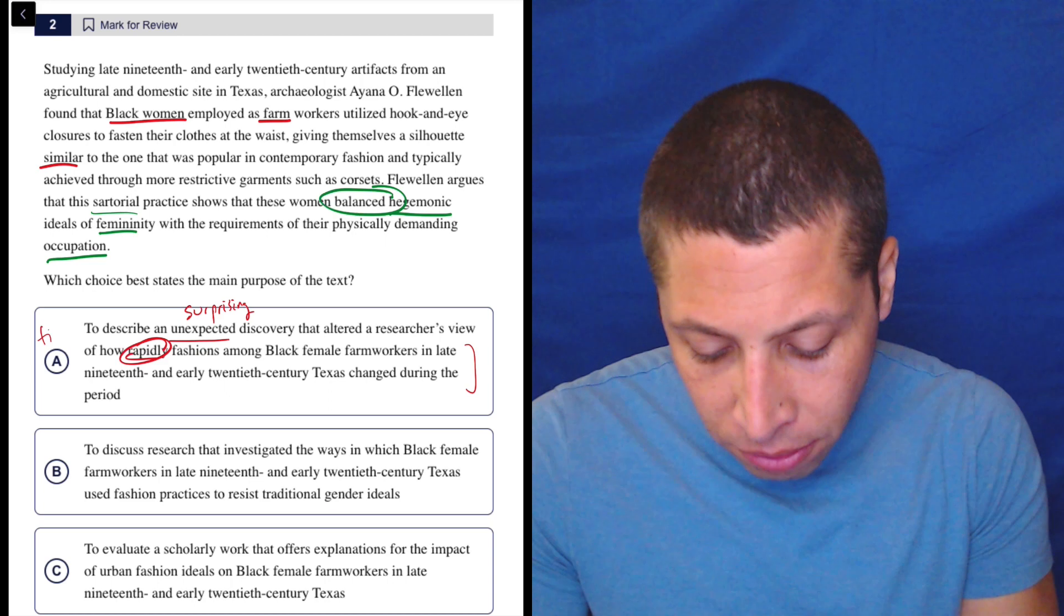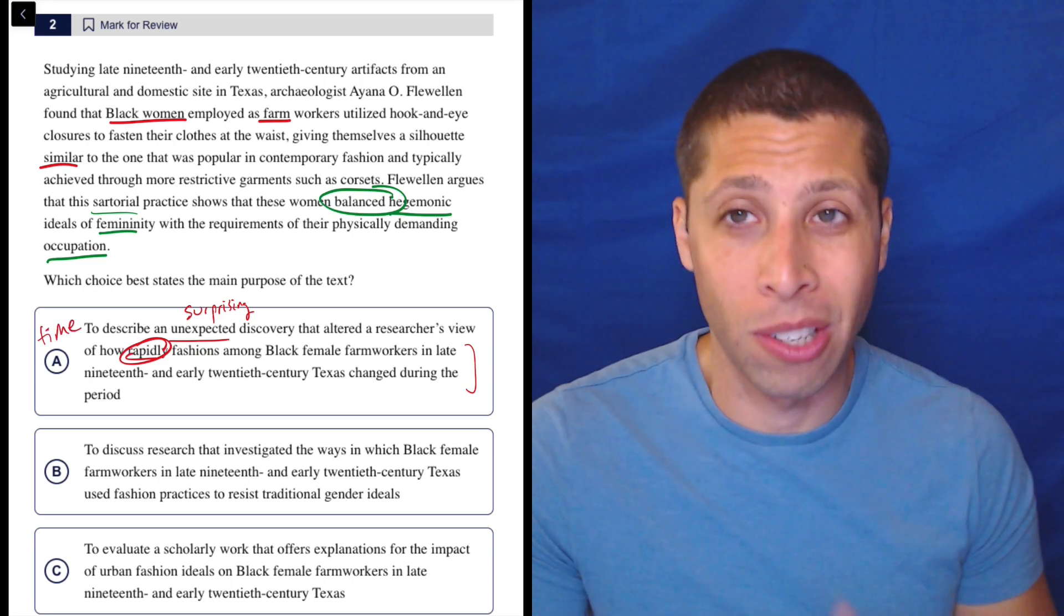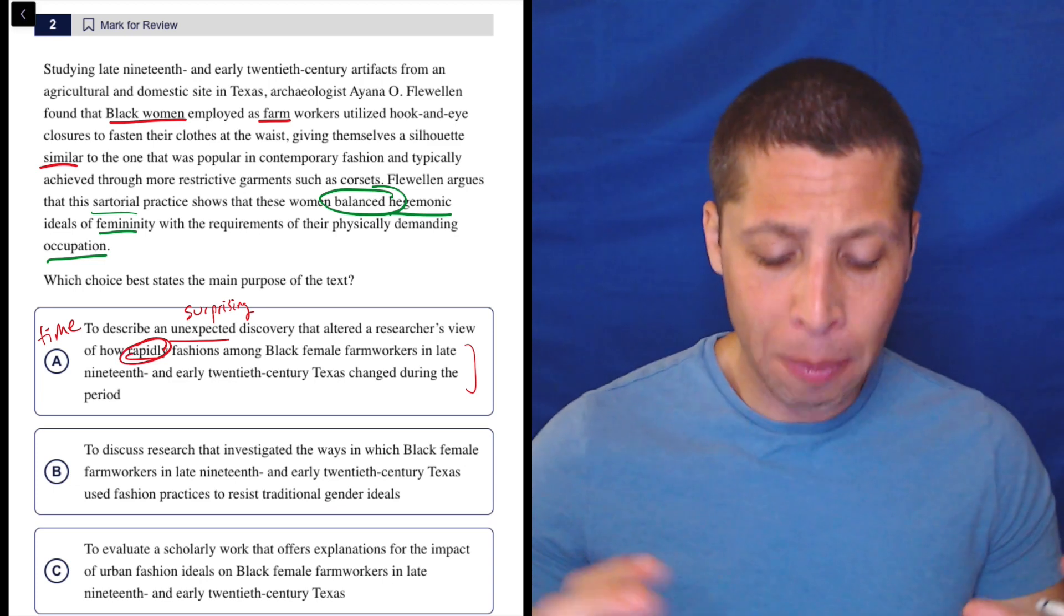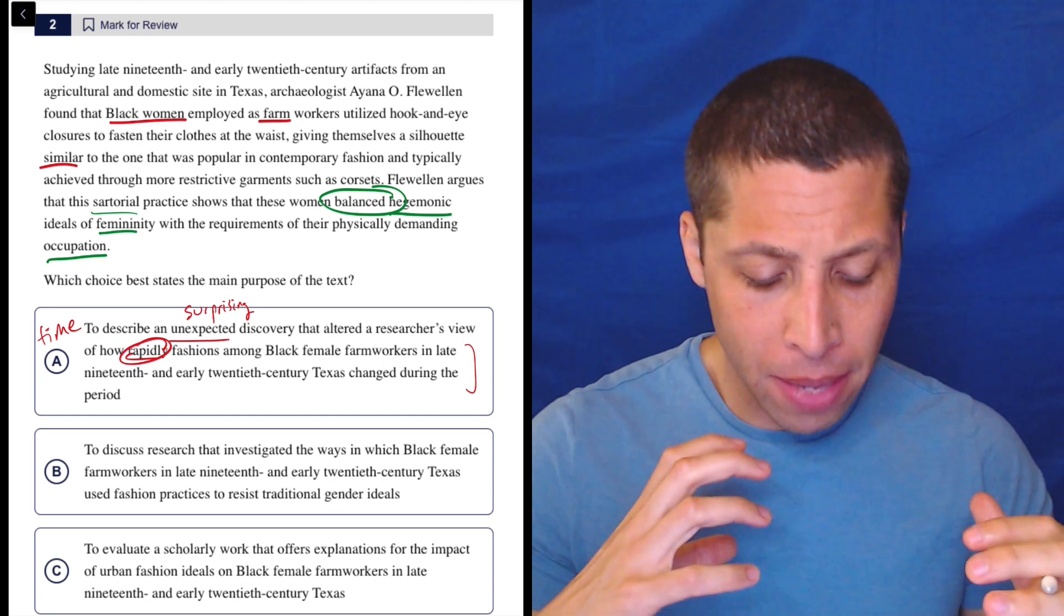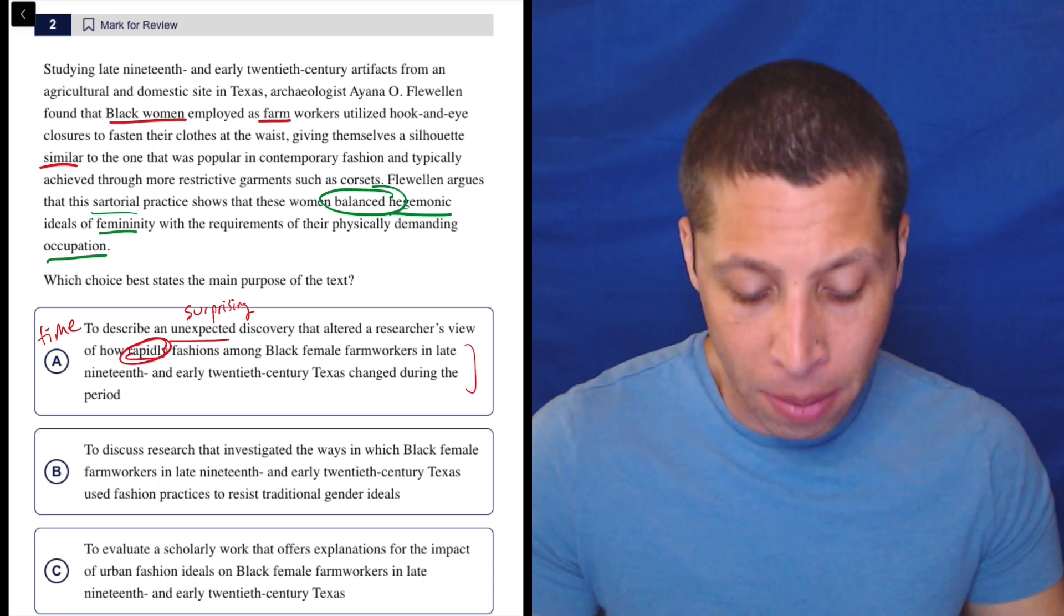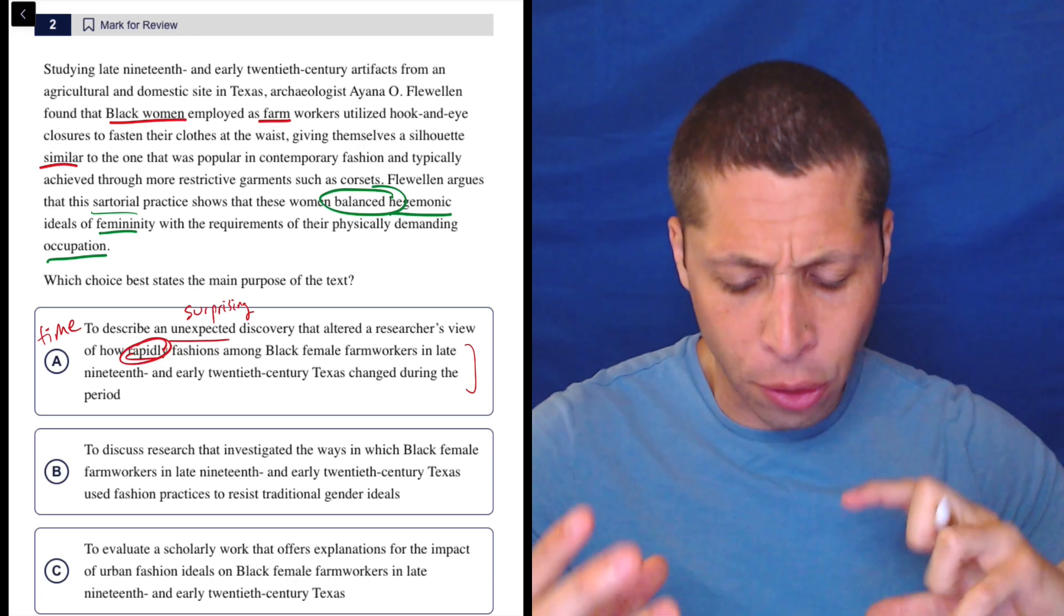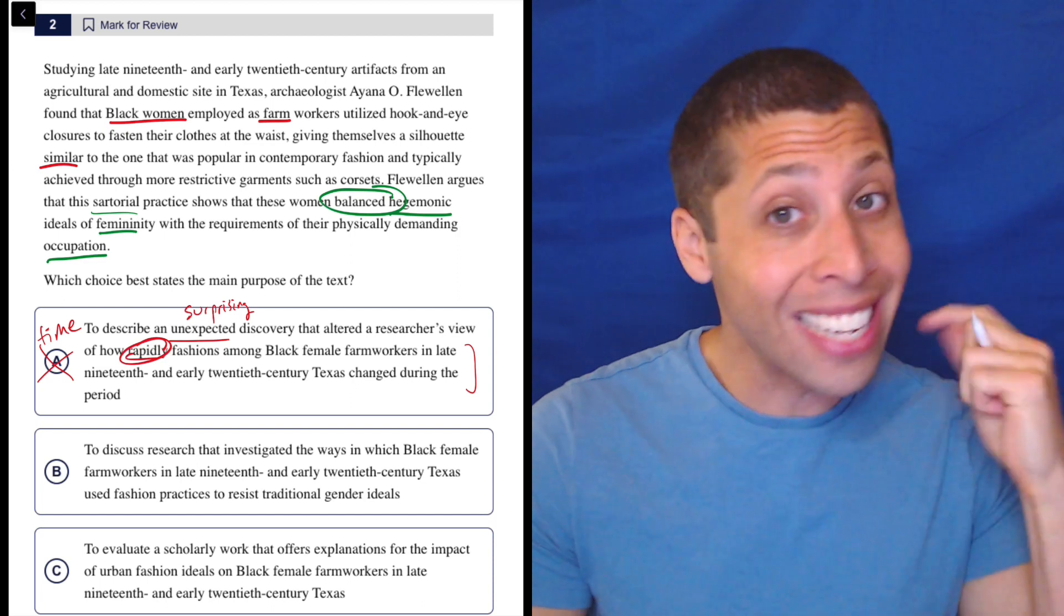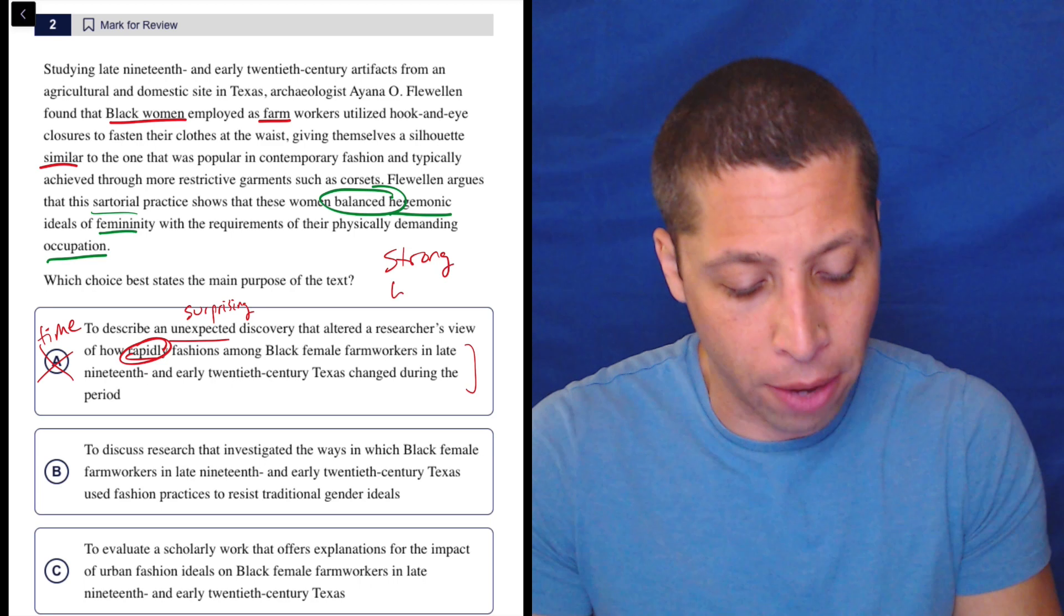Plus rapidly involves the idea of time, which we know is a common feature of wrong answer choices. Does the passage talk about time passing, things changing? It's talking about the past. It's talking about a specific era of the past, but it doesn't seem that it's changing. It just seems they're stating what it was. It was similar at this time to something, to clothes in a different part of society, but it's not saying there's a rapid change of any kind. So there's a lot about this choice that I would notice instantly that would help me understand the passage better and cross out the choice.